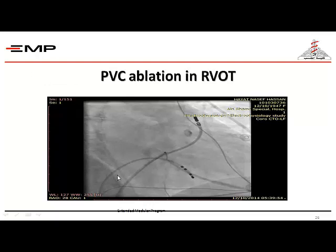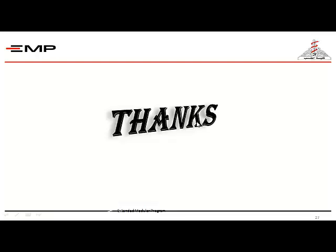This is a simple example of PVC ablation. This is a fluoroscopy image in the catheterization lab — this is the ablation catheter. During ablation of the PVC, the PVC was very frequent and not responding to medical treatment, originating from the right ventricular outflow tract, the most common site. Thank you for your attention.